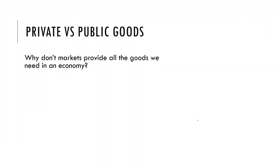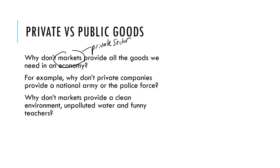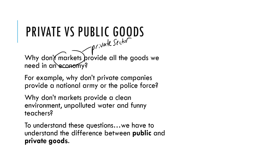If we think about private and public goods, the question we're asking is: why don't markets — the private sector — provide all the goods we need in an economy? For example, why don't we just pay someone to provide all of our army or the police force? Why don't markets just get it right and provide a nice clean environment, not pollute our water, and make sure that all of our teachers are absolutely hilarious? To understand these questions, we need to think about what is the difference between public and private goods.